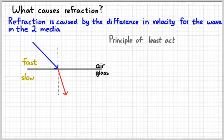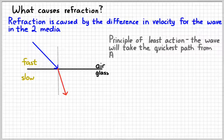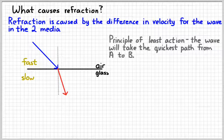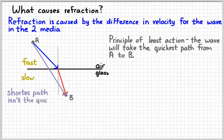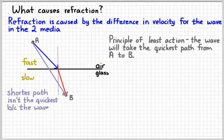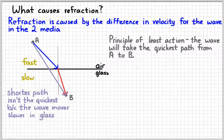Remember we learned a couple of days ago, the principle of least action. Waves are going to follow the quickest path, not the shortest, but the quickest path from point A to B. So if I designate those two points as points A and B, this path is the shortest path, but it's not the quickest path because the light waves travel slower in the glass than they do in the air.